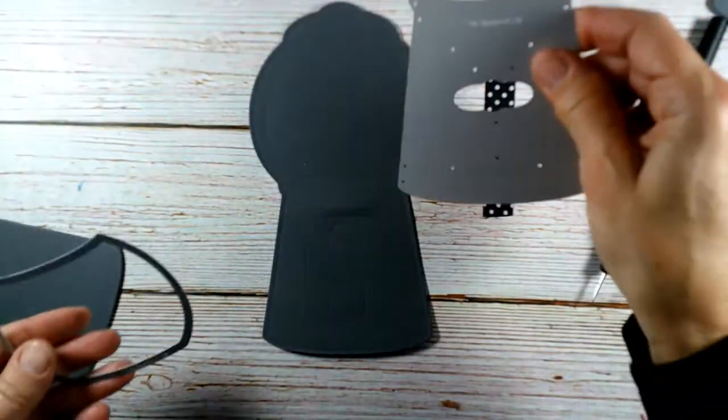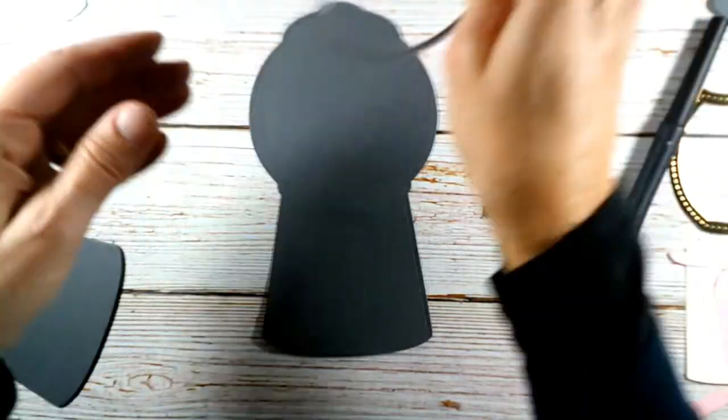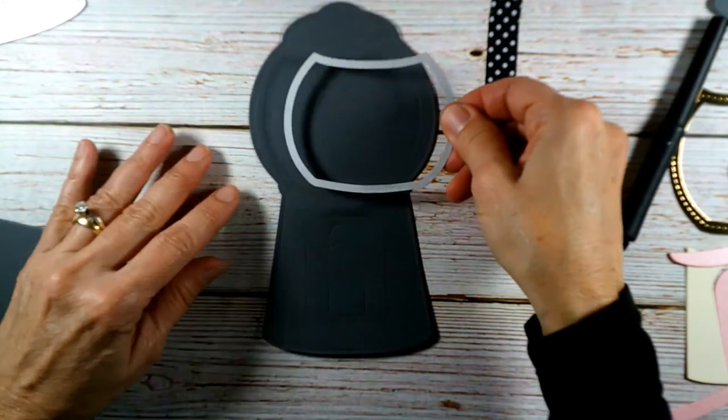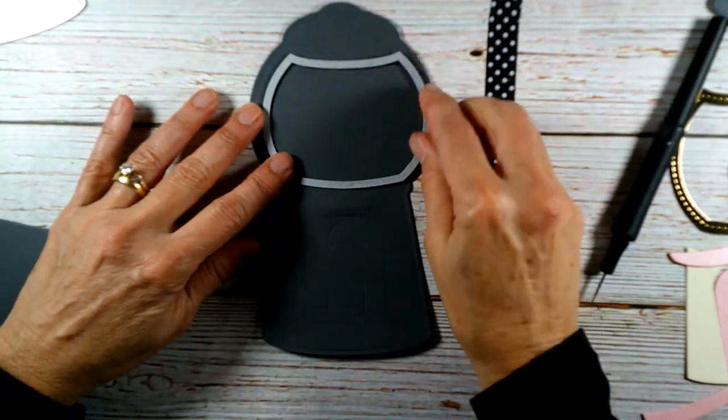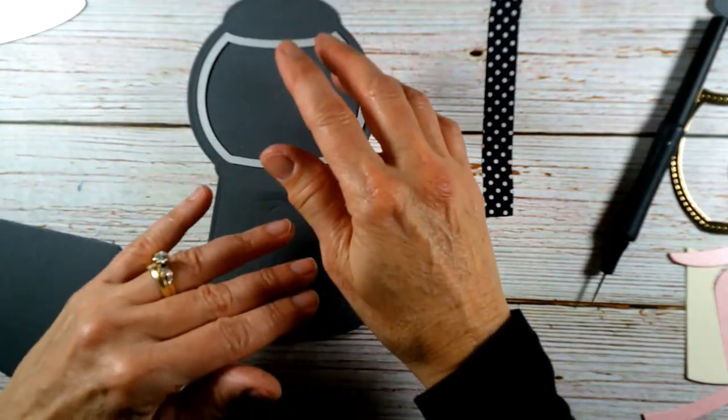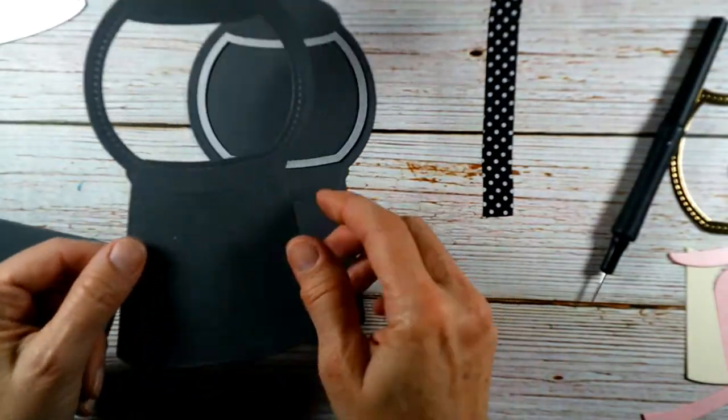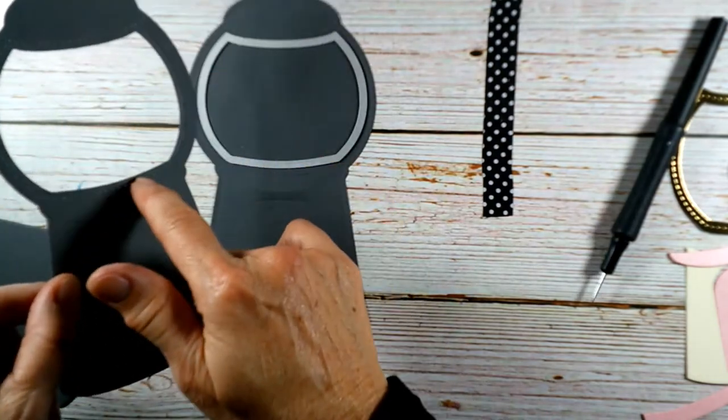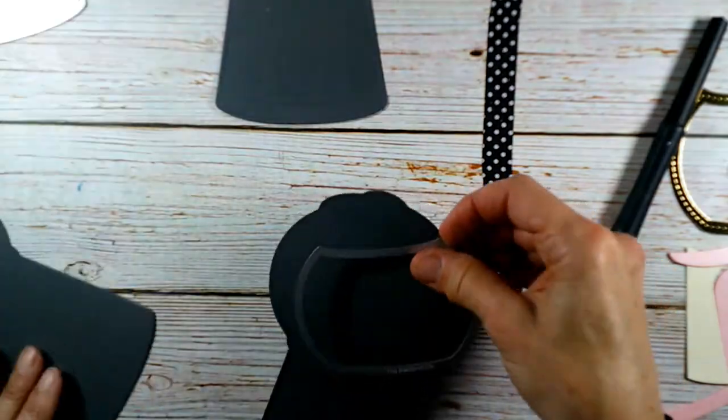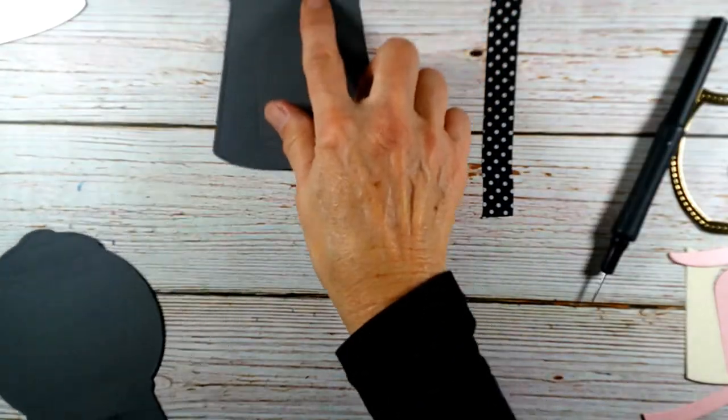Then the next thing I did was I took this piece, I laid it over the opening like that, and I ran it through the die cutter. And what that does is it gives me an opening on my gumball machine. Now we have the backing with the hole.